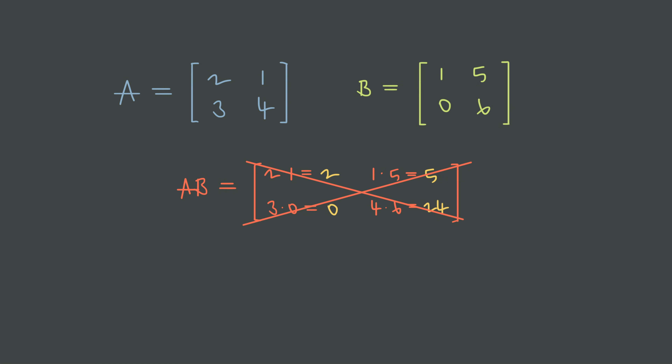Instead, when we multiply A by B, we get this resulting matrix. But where do we get the 2, 16, 3, and 39, and why is the rule designed in this way? By the end of this video, you'll know not only how to multiply any two matrices, you'll also understand the simple, intuitive reason why it actually works this way.